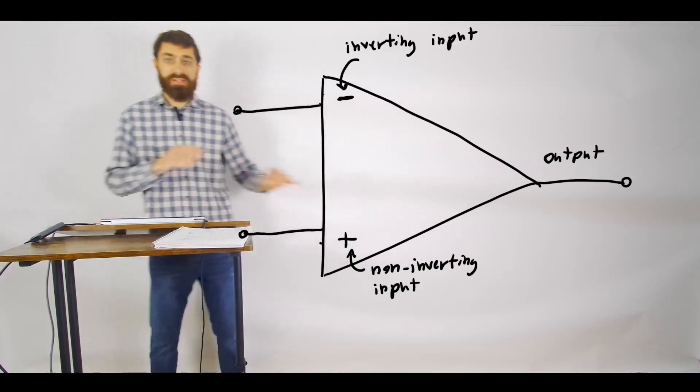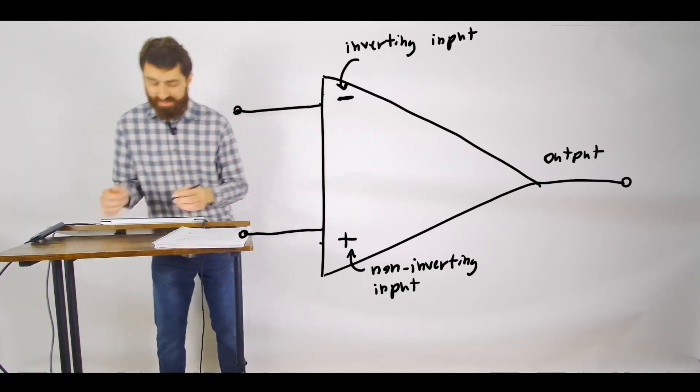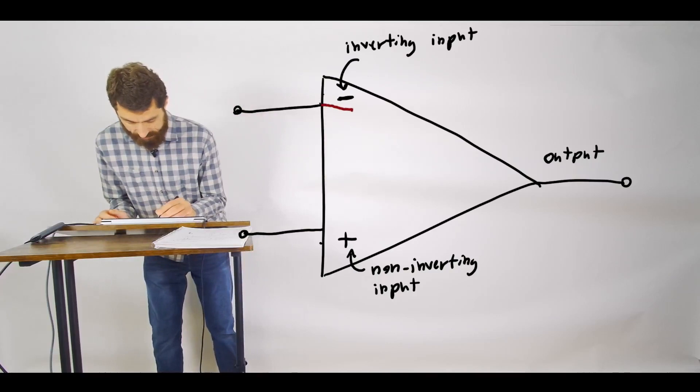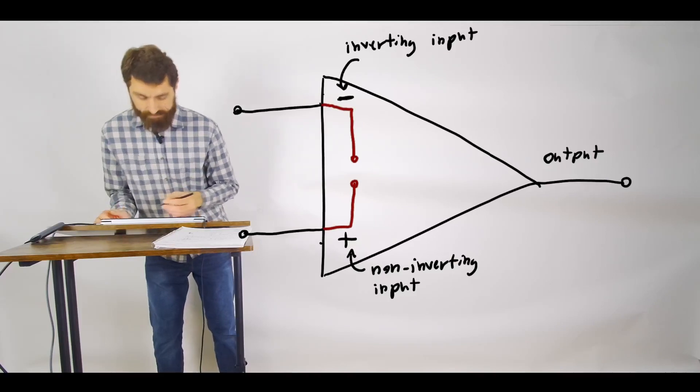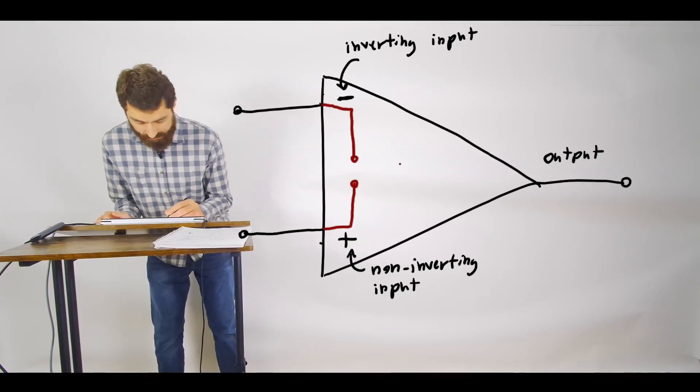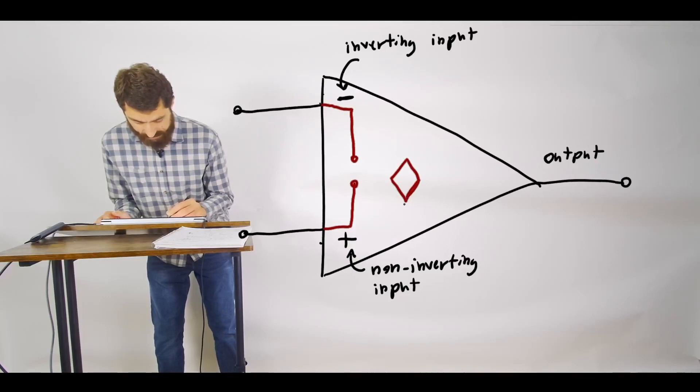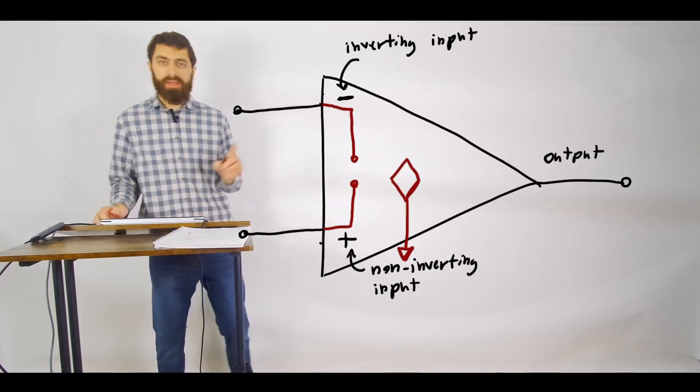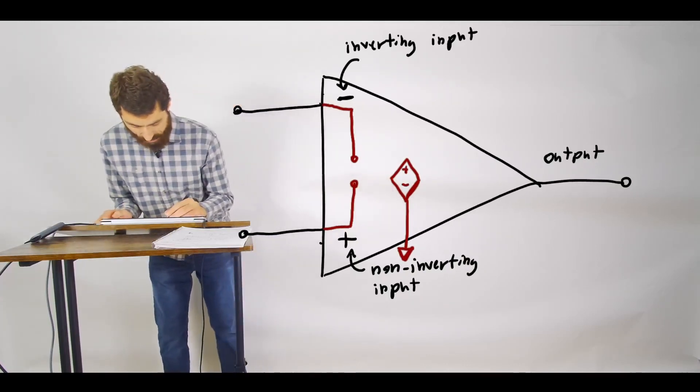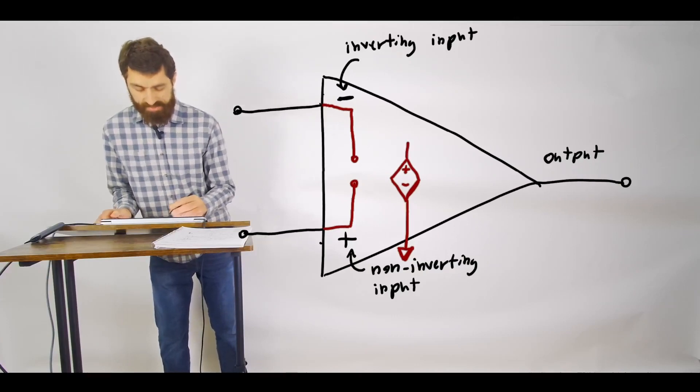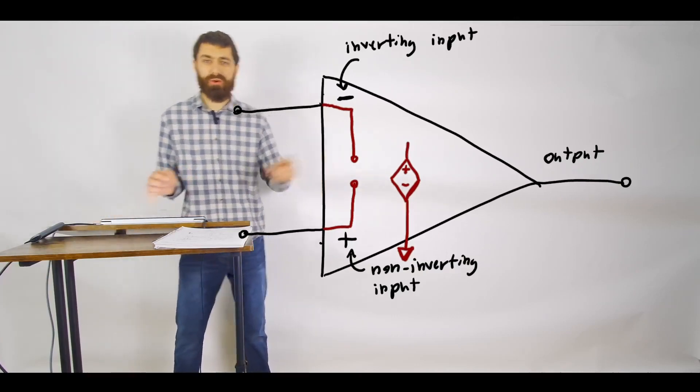But what is inside? What's inside or what it effectively acts like for an ideal op-amp is this. You have an open circuit and then you also have a dependent voltage source tied to ground.